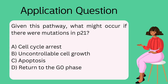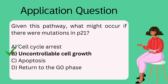Given this pathway, what might occur if there were mutations in P21? A, cell cycle arrest; B, uncontrollable cell growth; C, apoptosis; or D, return to the G0 phase. If you guessed B, you are correct. Since P21 is an important factor for halting transition into the S phase upon DNA damage, without it, unhealthy cells can continue to divide.